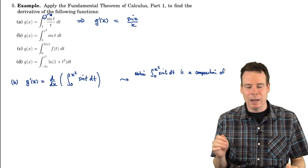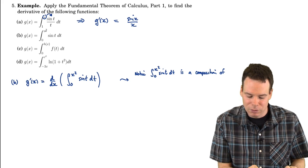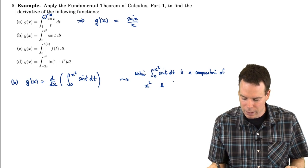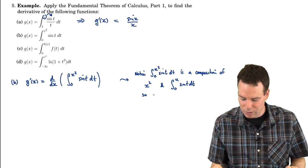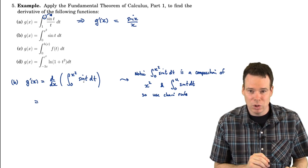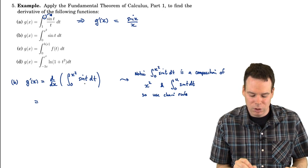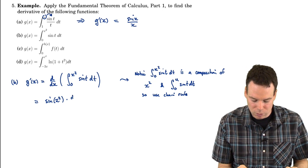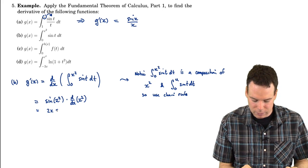Think about what happens when you plug in x = 5: g(5) is the integral from 0 to 5². The very first thing you do to 5 is square it, so that's the inside function. It's a composition of the squaring function and the integral function from 0 to u of sine(t) dt. To differentiate a composition, we use the chain rule. The derivative of the outside function — evaluated at the inside — times the derivative of the inside gives us 2x · sine(x²).